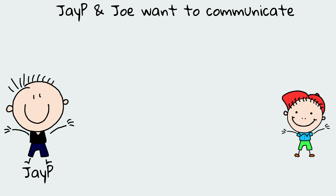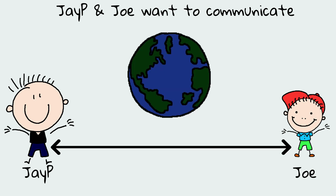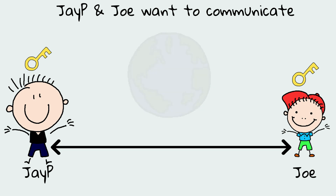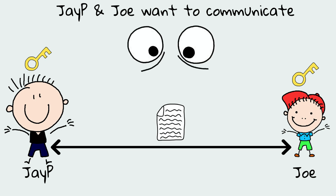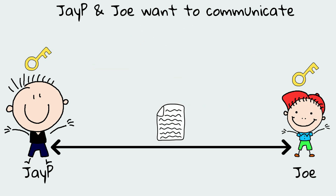Data integrity refers to the validation that data has not been modified or corrupted during transmission. Suppose JP and Joe are communicating over the public internet, and both of them have a symmetric key and have decided on the symmetric encryption algorithm to use. JP sends his encrypted message. Encryption means confidentiality — no one can understand the message because it is encrypted.